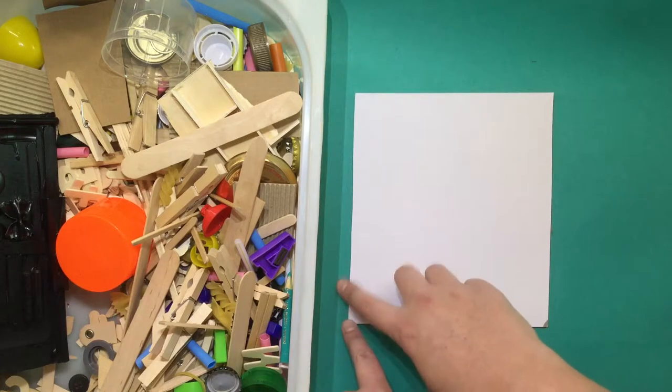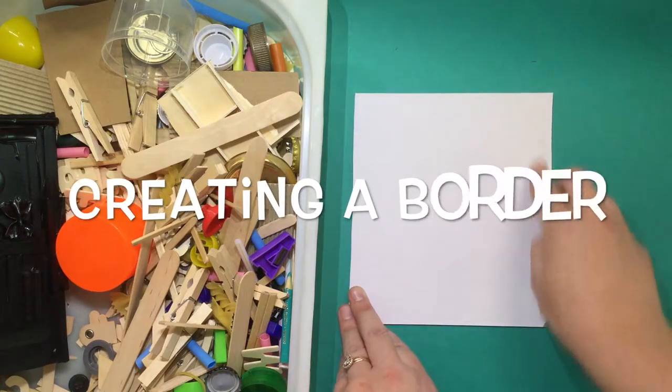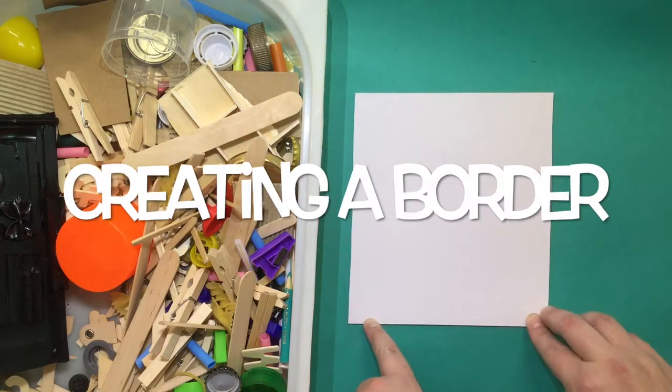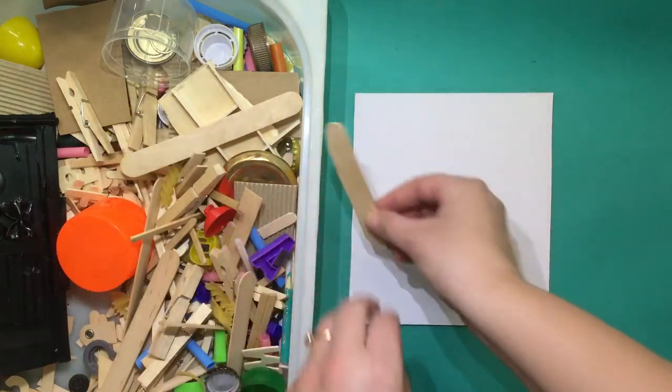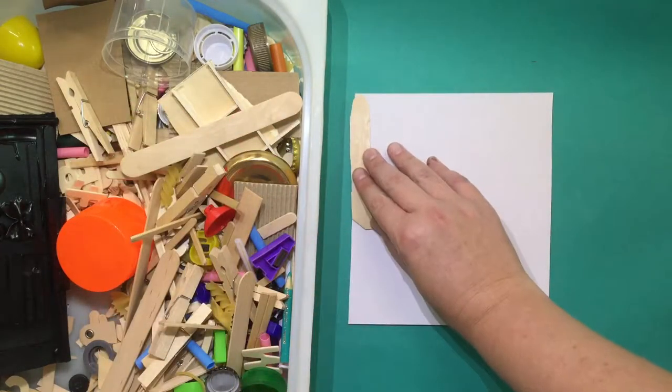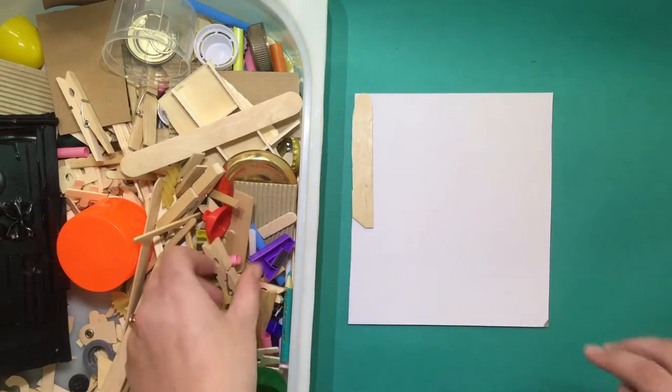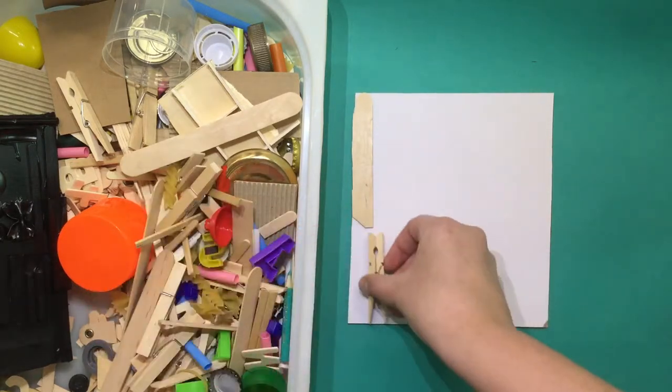Step one is I'd like you to create some kind of frame or outline around the edge of your cardboard. You're able to use any kind of materials out of the box that you think could help you achieve this outline.